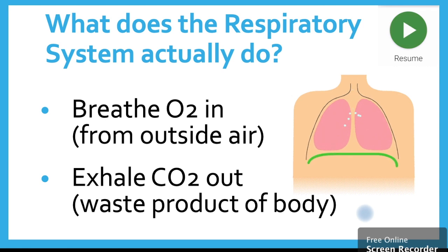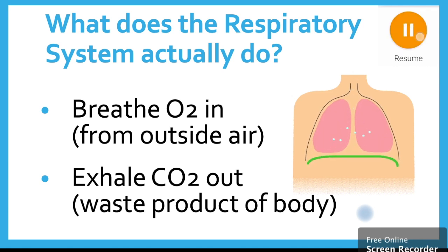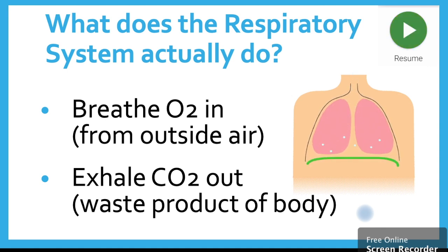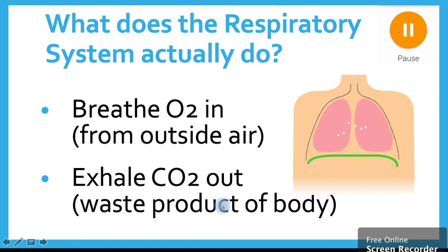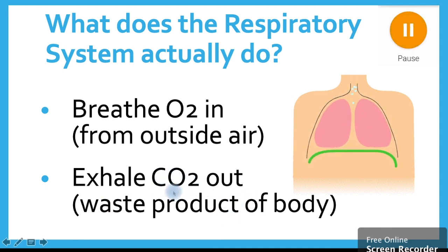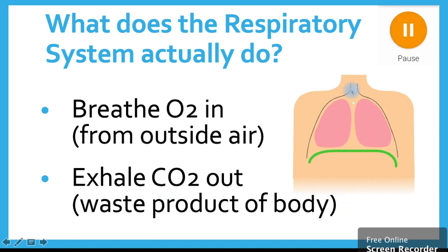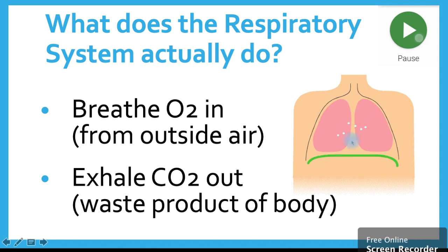So what does the respiratory system actually do? Its two main jobs are to breathe in oxygen from the outside world and exhale carbon dioxide. Carbon dioxide is a waste product of our body — when our muscles are working they produce this, and our body can't handle it so it's got to get rid of it. In this diagram we can see oxygen coming in and carbon dioxide going out.